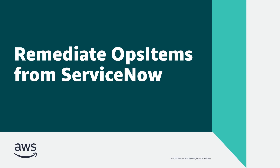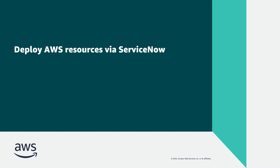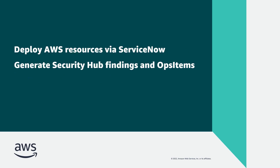In this video, you'll see how to remediate operational items, or ops items, from ServiceNow. With the AWS Service Management Connector for ServiceNow, you can deploy AWS resources that automatically generate AWS Security Hub findings and ops items for security issues. You can then execute automation documents to remediate the ops items right from ServiceNow.